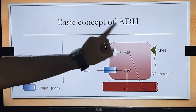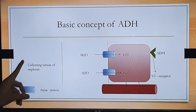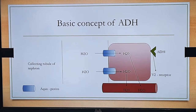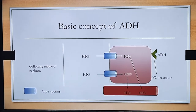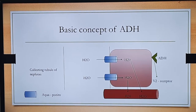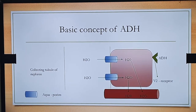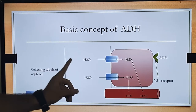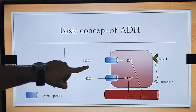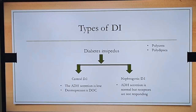When ADH binds to the V2 receptor present on the collecting tubule cells, it promotes production of aquaporins. These aquaporins reabsorb water molecules from the tubular lumen back into the blood, increasing water concentration in the blood.